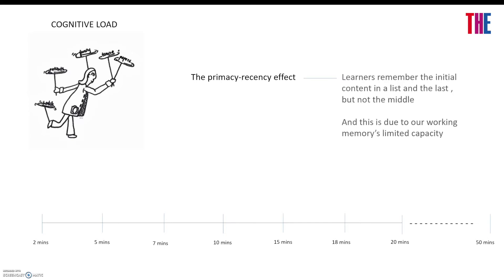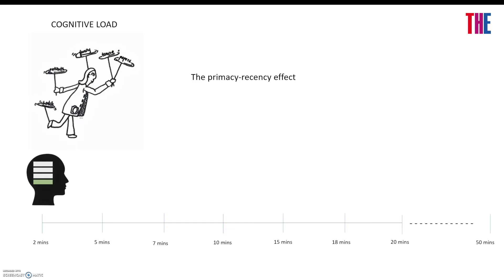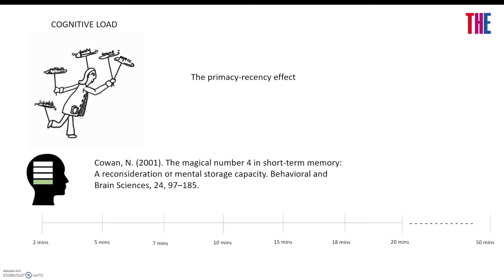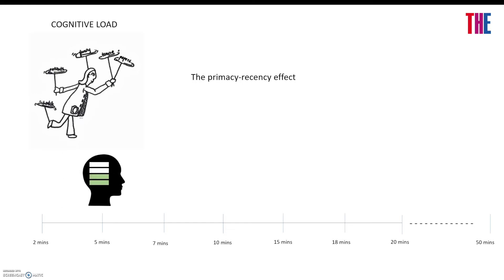And this is due to our working memory having a limited capacity. So if we think that working memory can process four items quite comfortably, as the lecture progresses, the working memory is brought to capacity. Once greater than four items are asked to be processed, the working memory begins to struggle and is eventually overloaded.